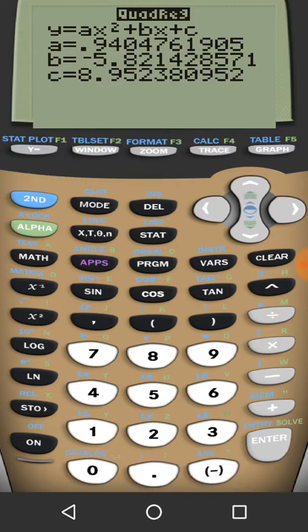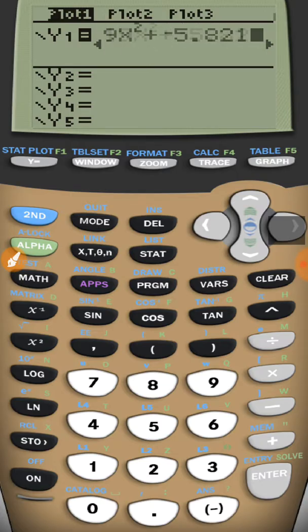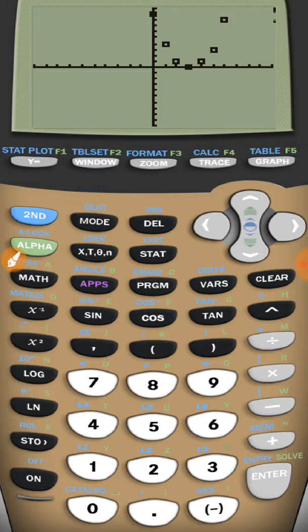You notice that this menu right here, it says store the regression equation. We can actually tell it to store that into one of the y equals. So I'm going to go down here. And when I'm right in front of store regression equation, I'm going to press the variables. See var is right there.